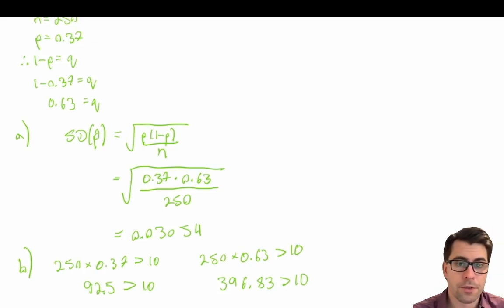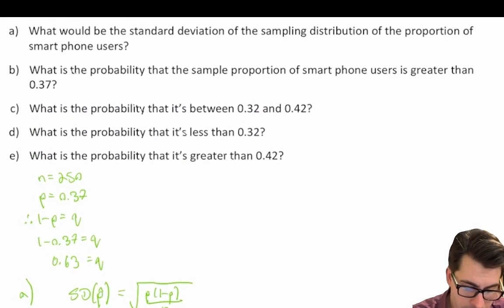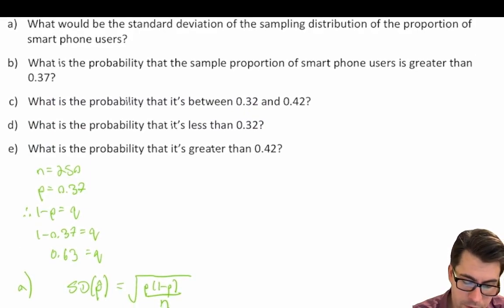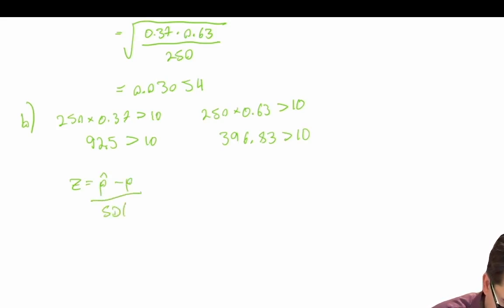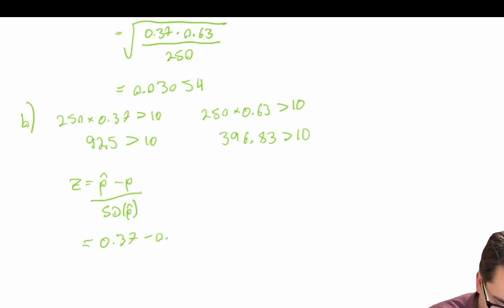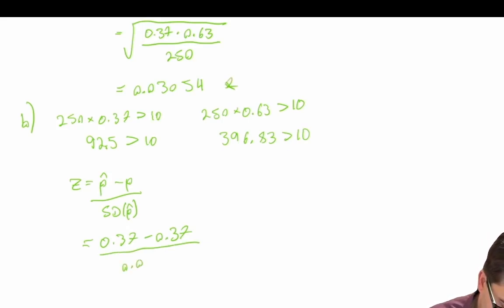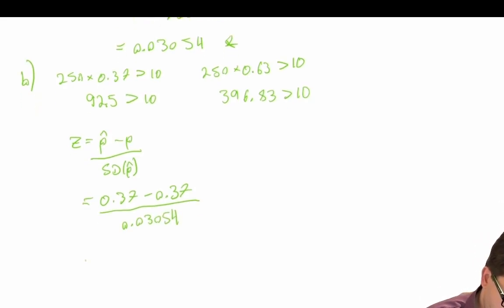Our assumptions and conditions for a normal distribution have been met. When we're asked what is the probability that the sample proportion of smartphone users is greater than 0.37, we calculate a z-score: z equals p-hat minus p divided by the standard deviation of p-hat. The observed proportion is 0.37 minus the expected proportion 0.37, divided by 0.0305, giving zero.